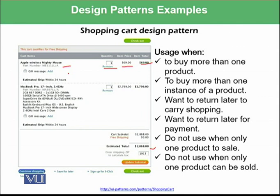This design pattern says that you should write the name of the product, the quantity, item price, and item total. This design pattern can be used when buying more than one product — we can write that we need one product here, a second product, and a third product if required. It also applies when buying more than one instance of a product, and when you want to return later to continue shopping or return later for payment.